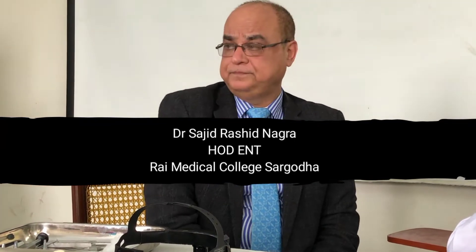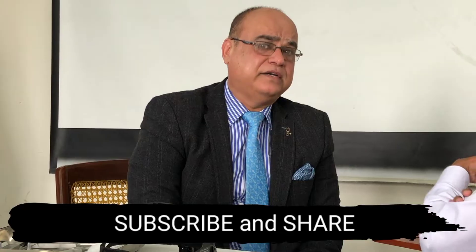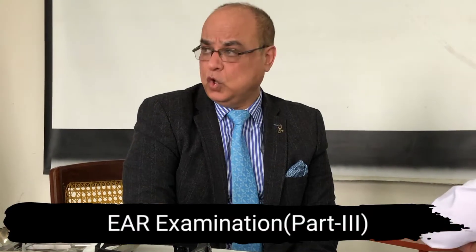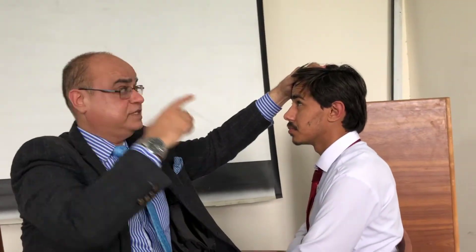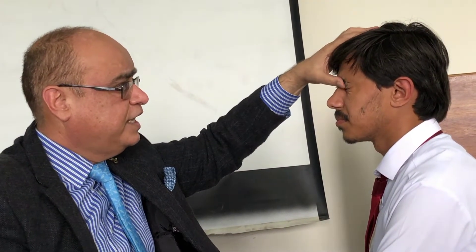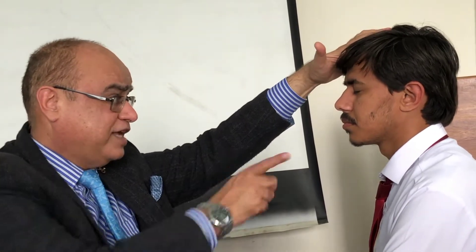The facial nerve is an integral part of the ear examination — 50% of the ear examination is not complete if you have missed the facial nerve. It supplies the muscles of facial expression, so we check it by testing those muscles. Ask the patient to frown the forehead by looking upwards, then close the eyes forcefully, then check the nasolabial fold.